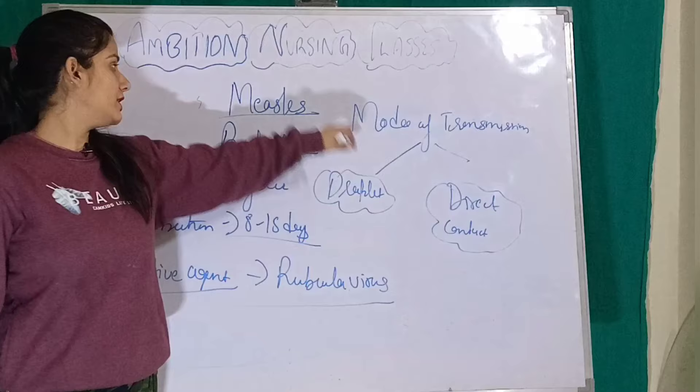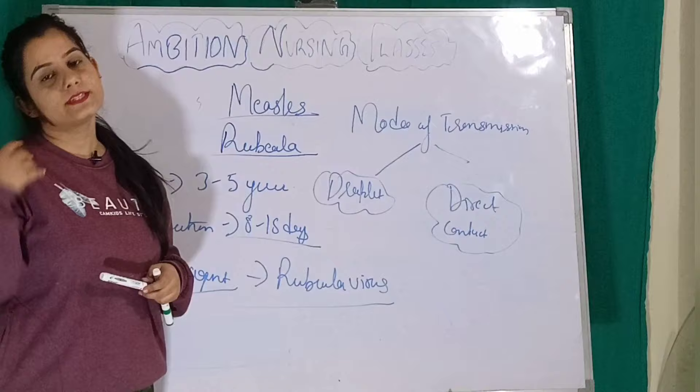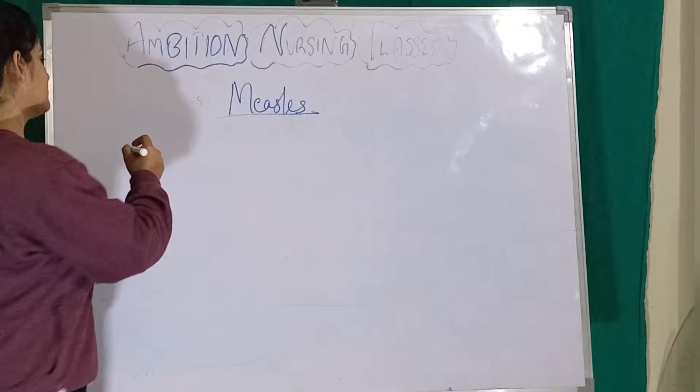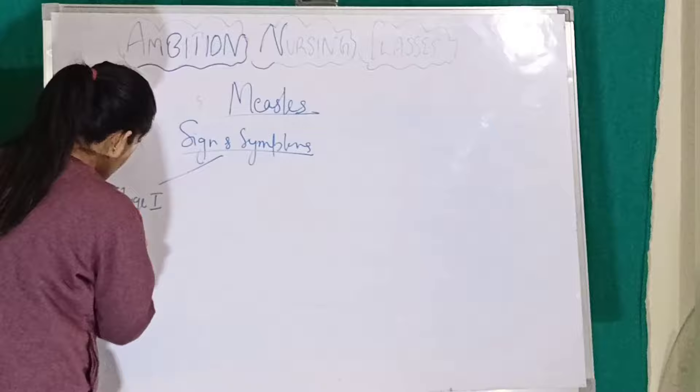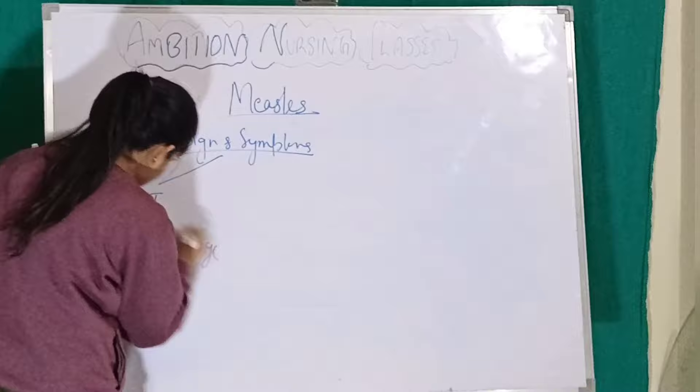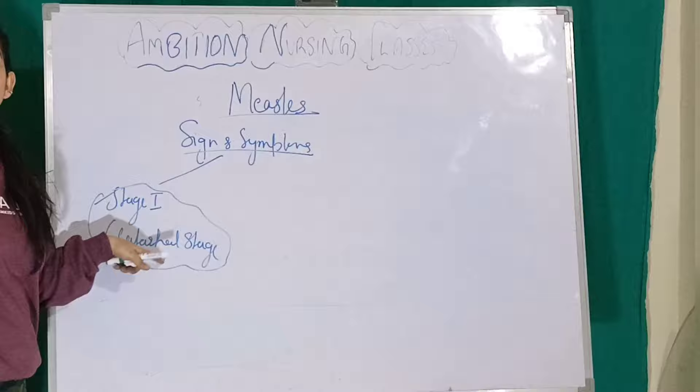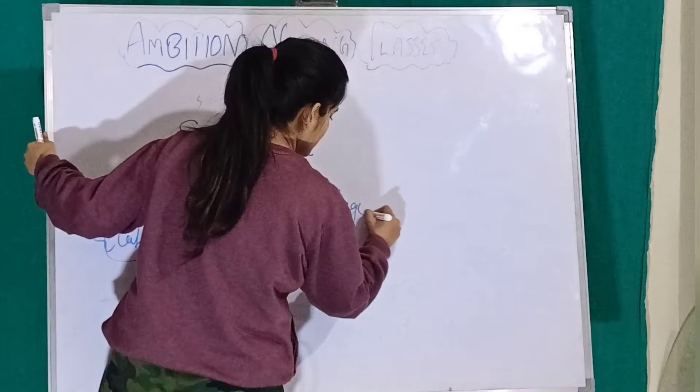Next comes the signs and symptoms related to measles. There are two stages: stage one, which we call the catarrhal stage, and stage two, which we call the stage of eruption.